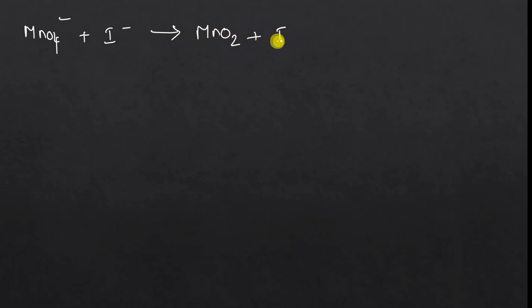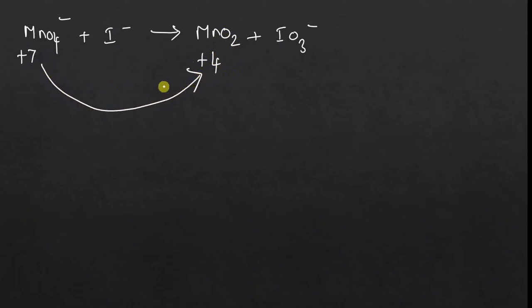Let us consider this equation: MnO4⁻ + I⁻ → MnO2 + IO3⁻. Here the oxidation state of Mn is +7, and in MnO2 the oxidation state of Mn is +4. So it has gone from +7 to +4 — the difference in electrons is 3, meaning 3 electrons are involved. This is a reduction reaction, as the oxidation number decreases.